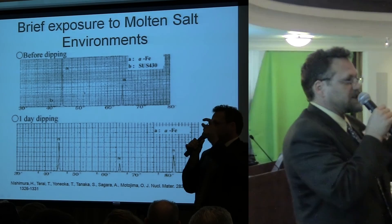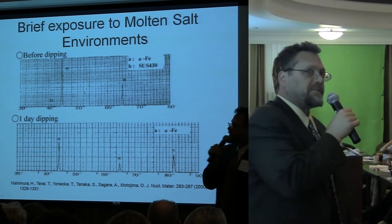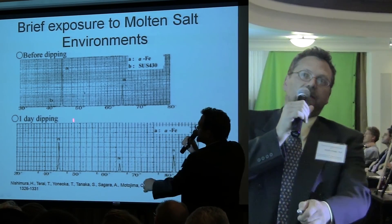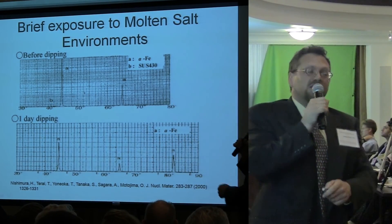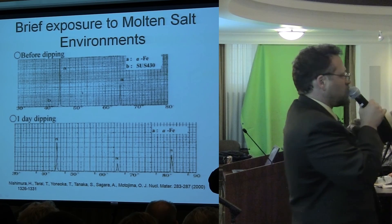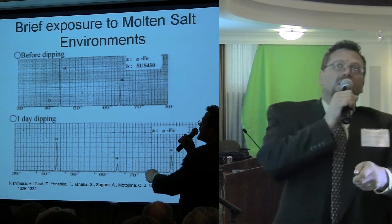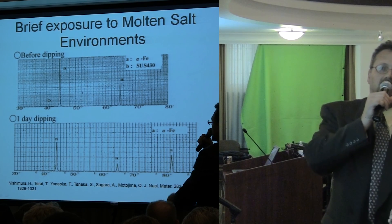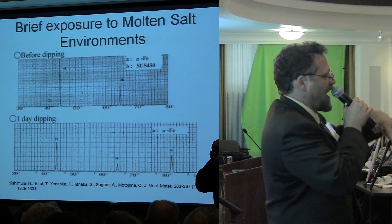We use X-rays to look at crystals and figure out their structures — it's like a fingerprint. We have the alpha peak and the beta, called reflections in 2θ. Nishimura, a researcher out of Japan, did this work with FLIBE and different polytypes of silicon carbide at temperature — 587°C. Two different polytypes were tested, and this is his baseline control.